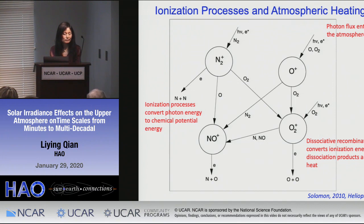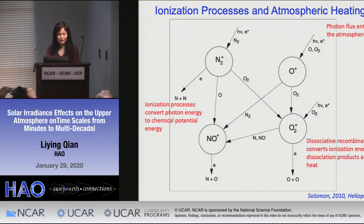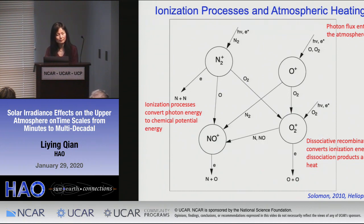Question: Do you have a sense of how uncertainty in the solar inputs affects uncertainty in model outputs — like a 20 percent uncertainty in solar input? Answer: I know that a 2 percent change in F10.7 index results in about a 4 percent change in mass density in the upper thermosphere. So roughly a factor of two amplification.